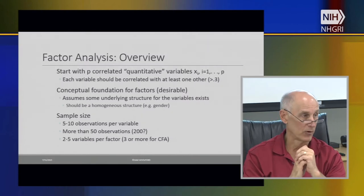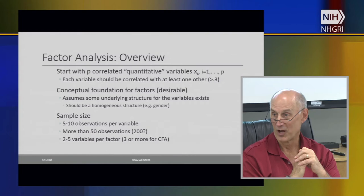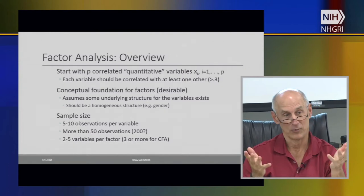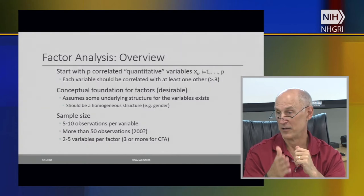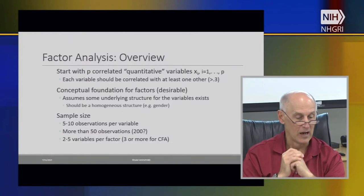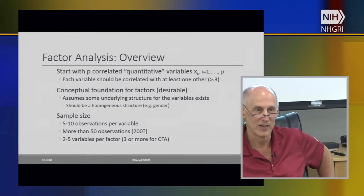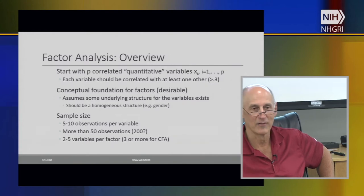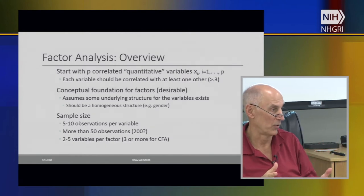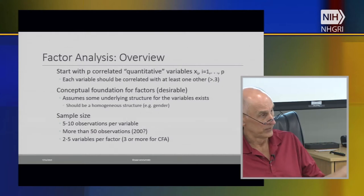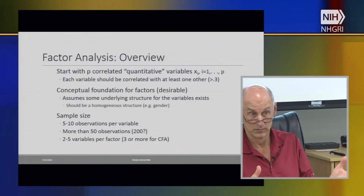I usually use the ten observations per variable number for regression as well. I've seen limits that say you want at least 50 observations overall, but I've also seen suggestions that you shouldn't run a factor analysis with less than 200. There's not a lot of consensus here, but the range affects the reliability of the overall model. The number of observations per variable affects reliability of the parameters you're estimating; the total number of observations affects reliability of the overall model.